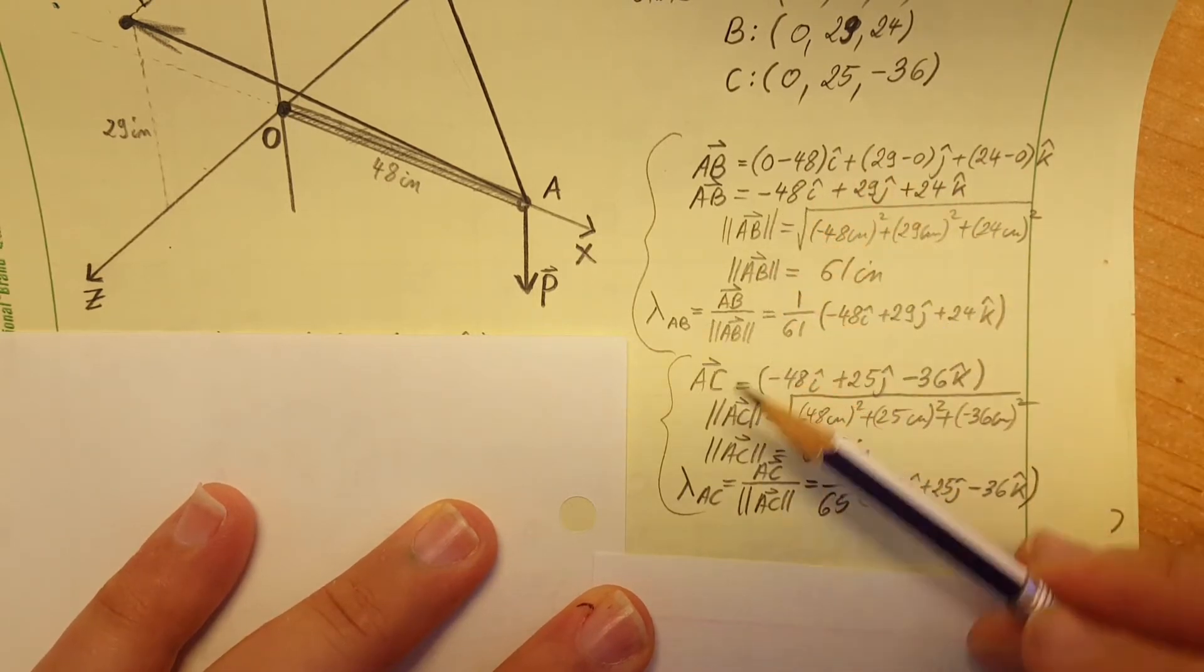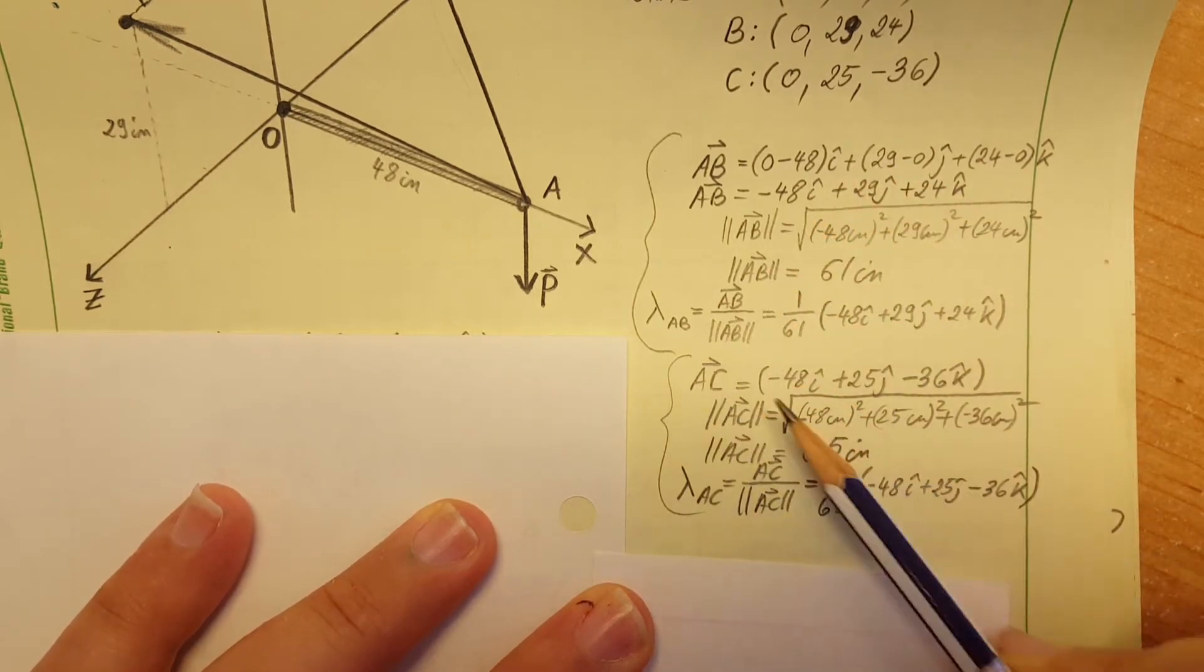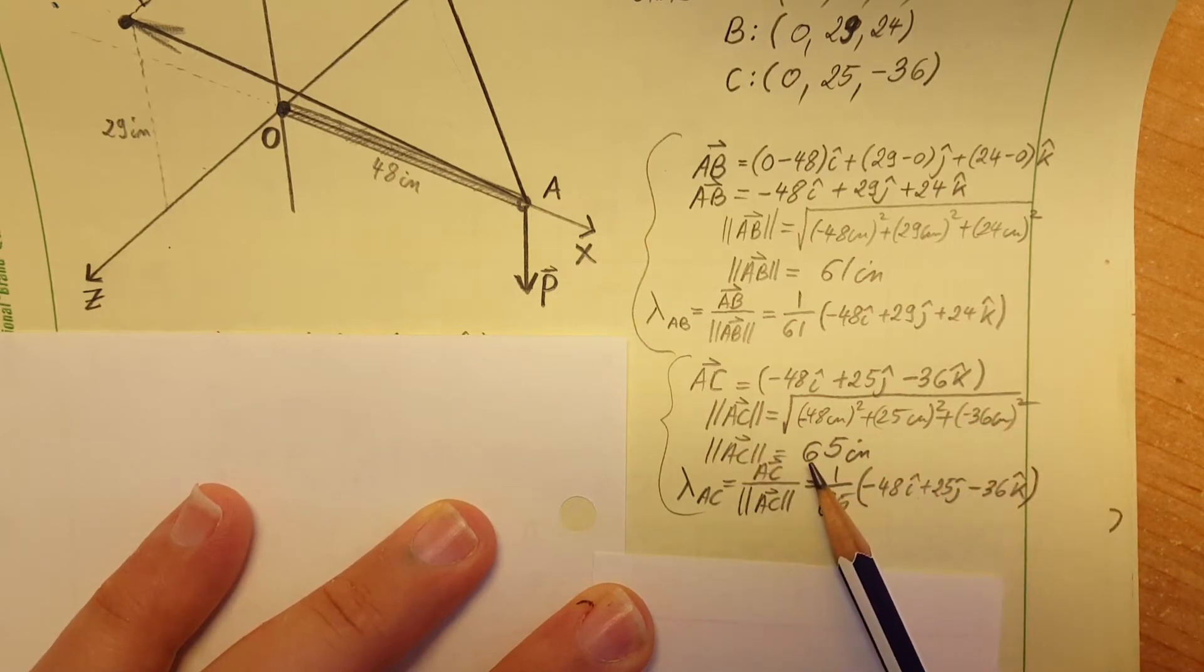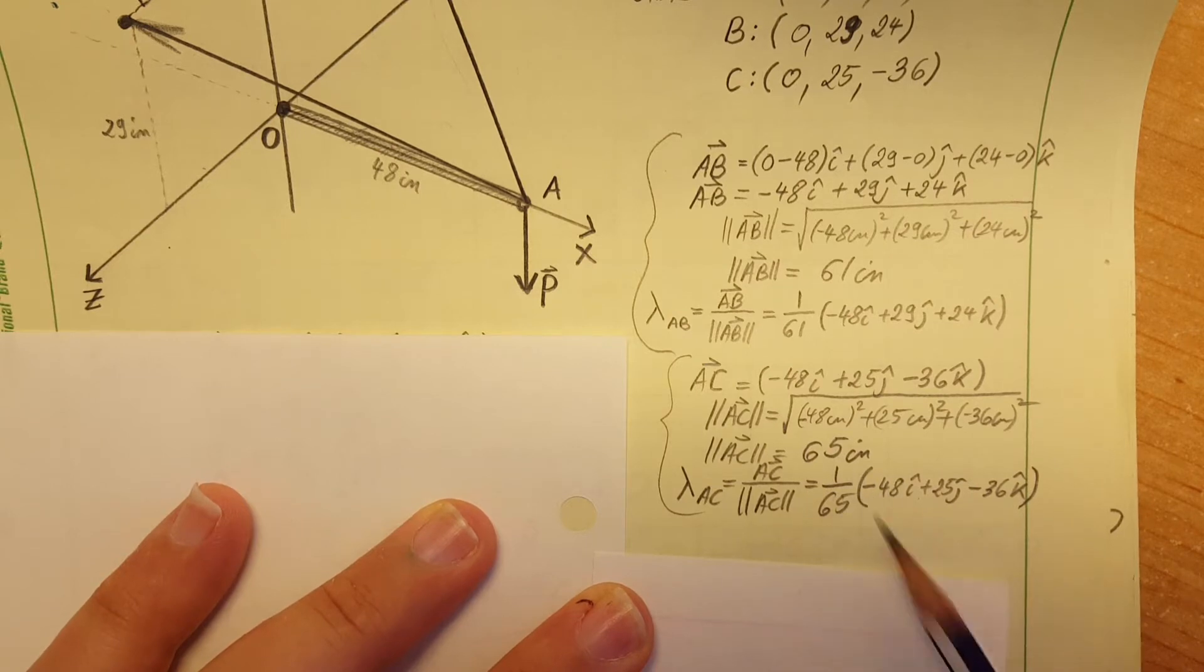Now we're gonna do the exact same thing we did here but for AC. Find position vector, find the magnitude. We're gonna get 65. Unit vector is position vector over magnitude, which equals right here: 1 over 65, parentheses, negative 48 i plus 25 j minus 36 k.